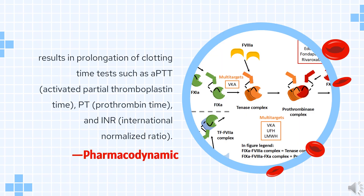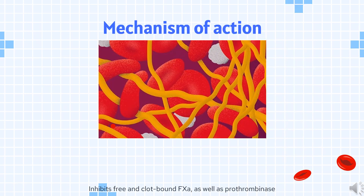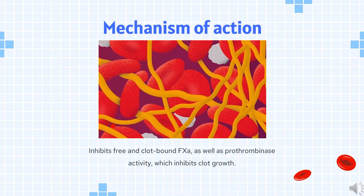Pharmacodynamics: Administration of Edoxaban results in prolongation of clotting time tests such as APTT (activated partial thromboplastin time), PT (prothrombin time), and INR (international normalized ratio). Mechanism of action: Edoxaban is a selective inhibitor of Factor Xa, a serine endopeptidase of the clotting cascade required for cleavage of prothrombin into thrombin.